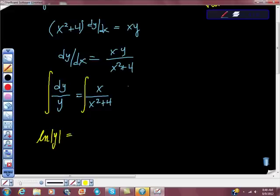So ln of absolute y is equal to, this one is a little bit more difficult to see, possibly. I don't know if you can see that this is an ln function, but it is an ln, so all I'm going to do is just, I'll do a little bit of quick work up here and say u is equal to x squared plus 4.